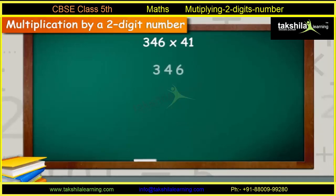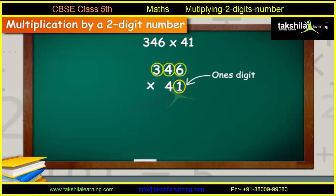Let us first arrange the numbers as shown. Let us first multiply the multiplicand 346 with the ones-digit of the multiplier 41, which will be 346 into 1, which comes out to be 346.